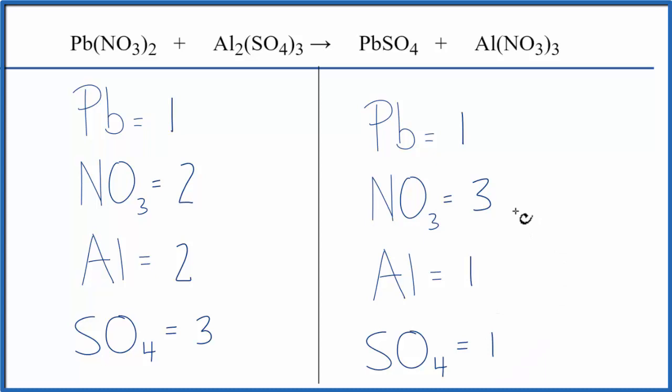So to balance it, why don't we fix the aluminums first? That looks kind of simple because we could just put a two in front of the aluminum nitrate. So we'll put that two there. One times two, that gives us two aluminums. Those are balanced.